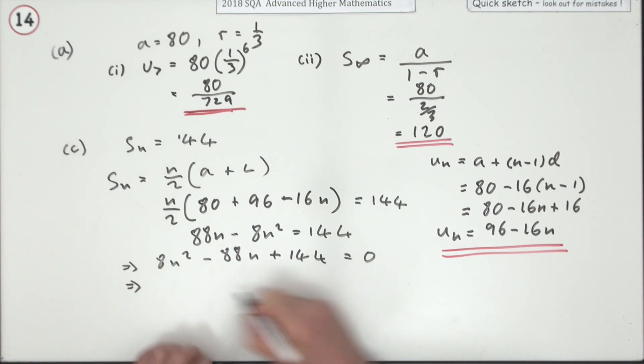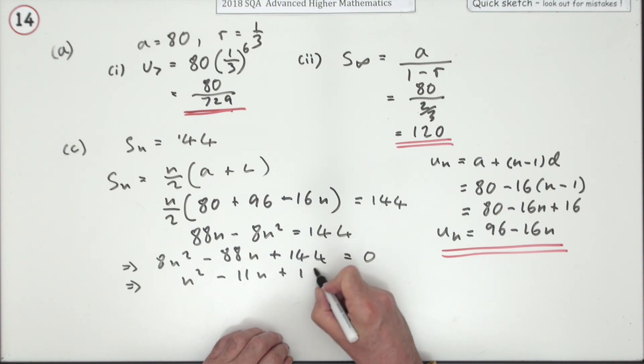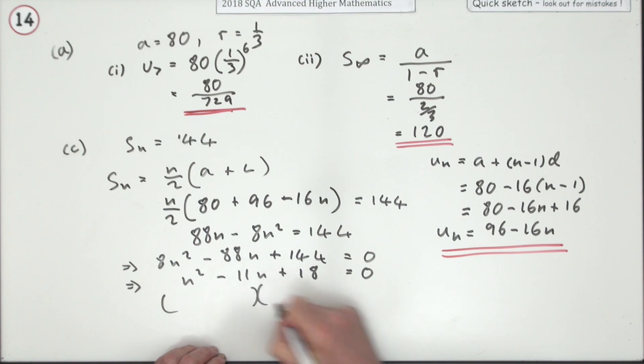Divide everything by 8. n squared minus 11n plus 18 equals 0. So, factorise it, since we've got a quadratic there. It can only be n times n. Oh, there you go. Two nines, and they add up to 11.